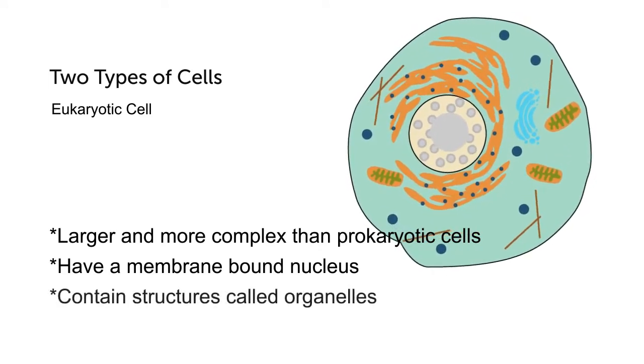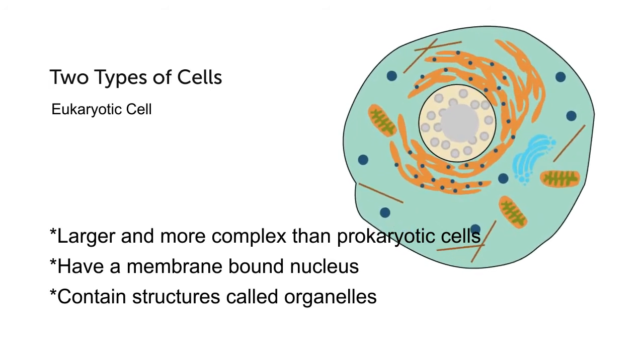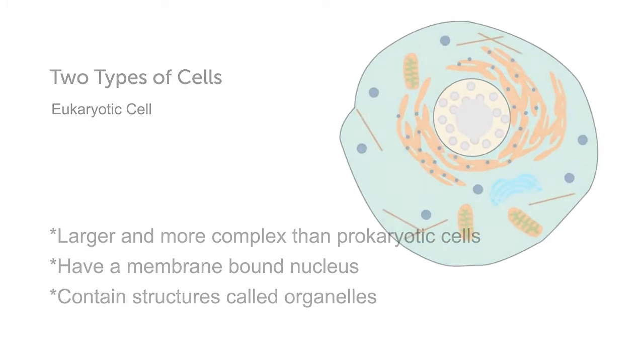Eukaryotic cells also have structures called organelles, which each have specific functions inside eukaryotic cells, much like the organs inside the human body.